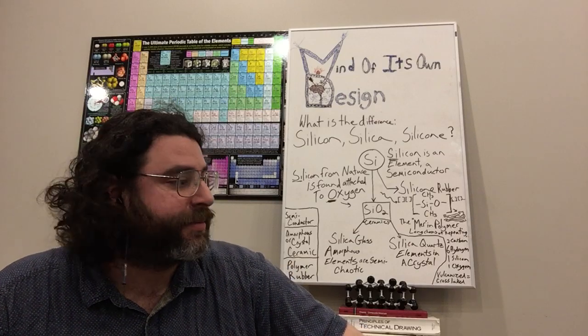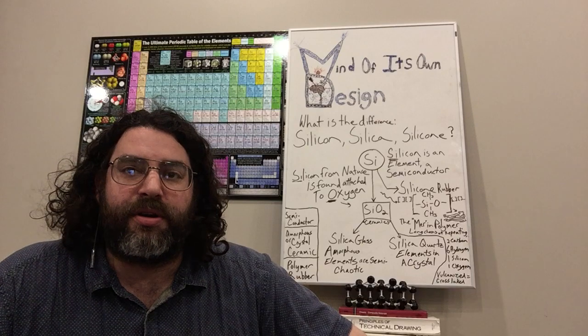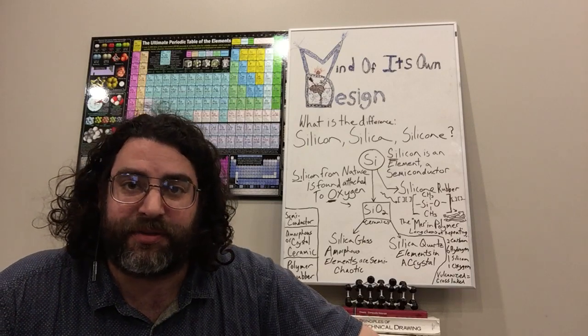Silicon is the element. It is the pure material, but on Earth it's hard to find these pure materials naturally.